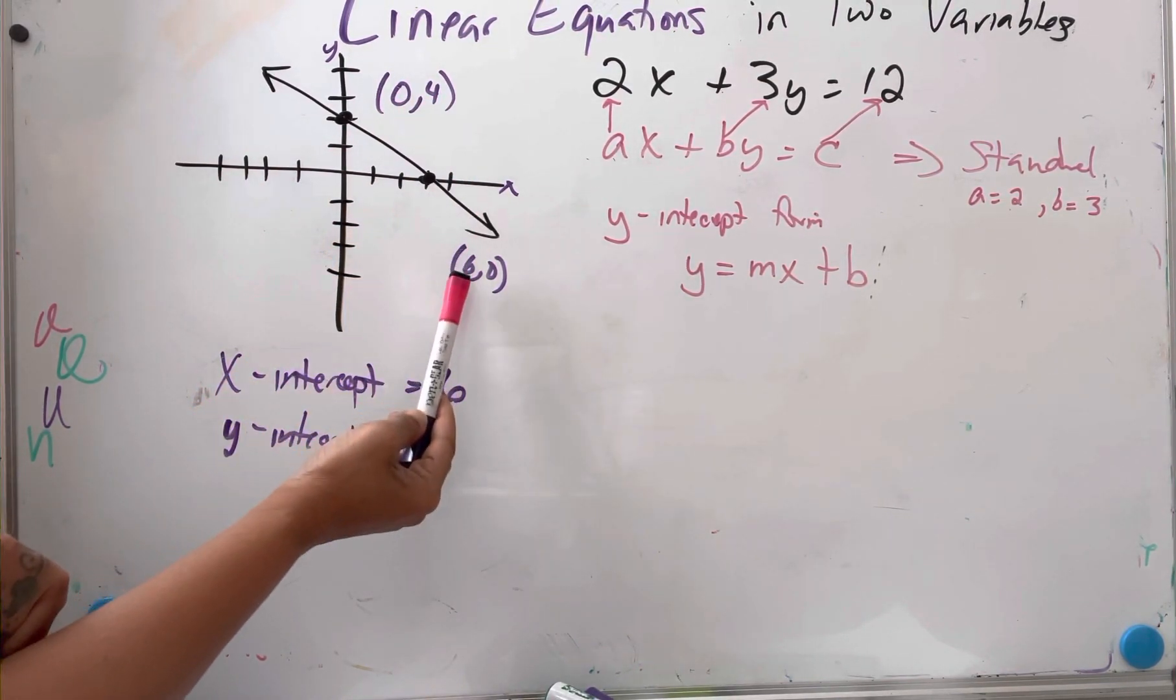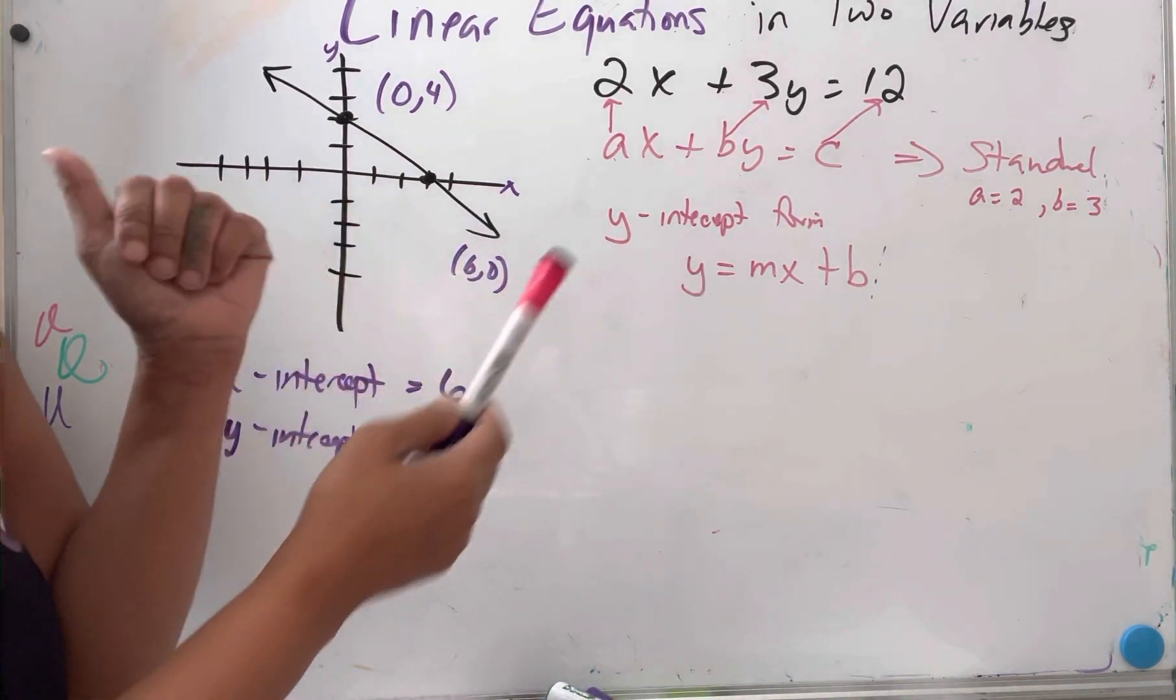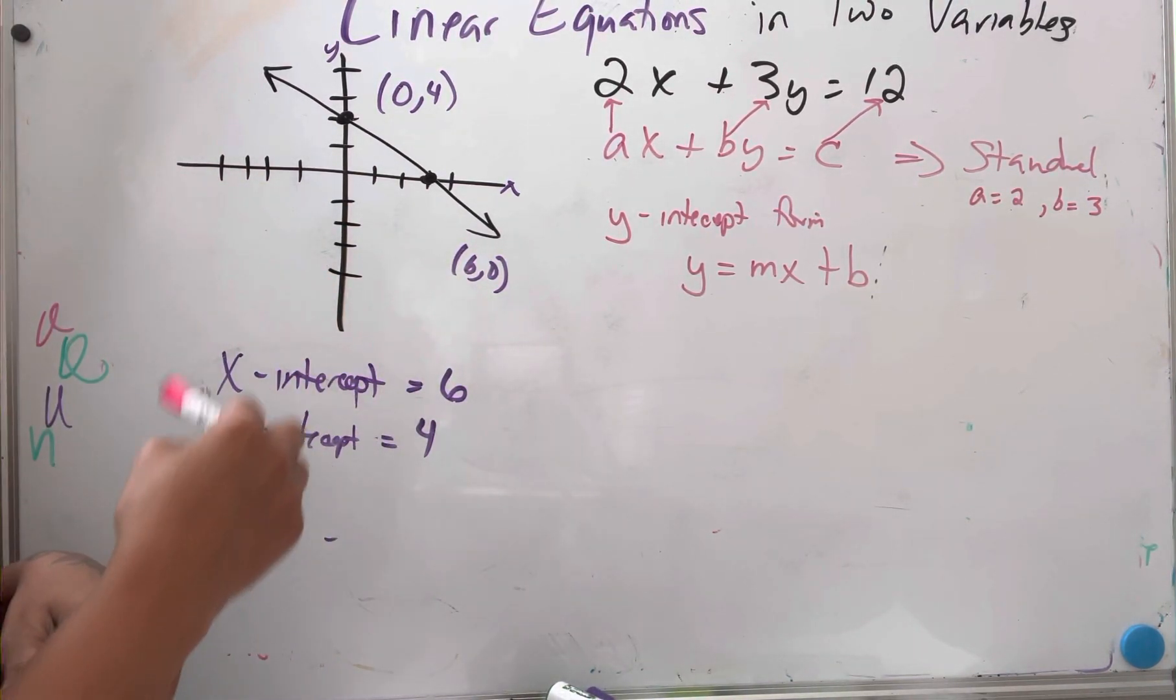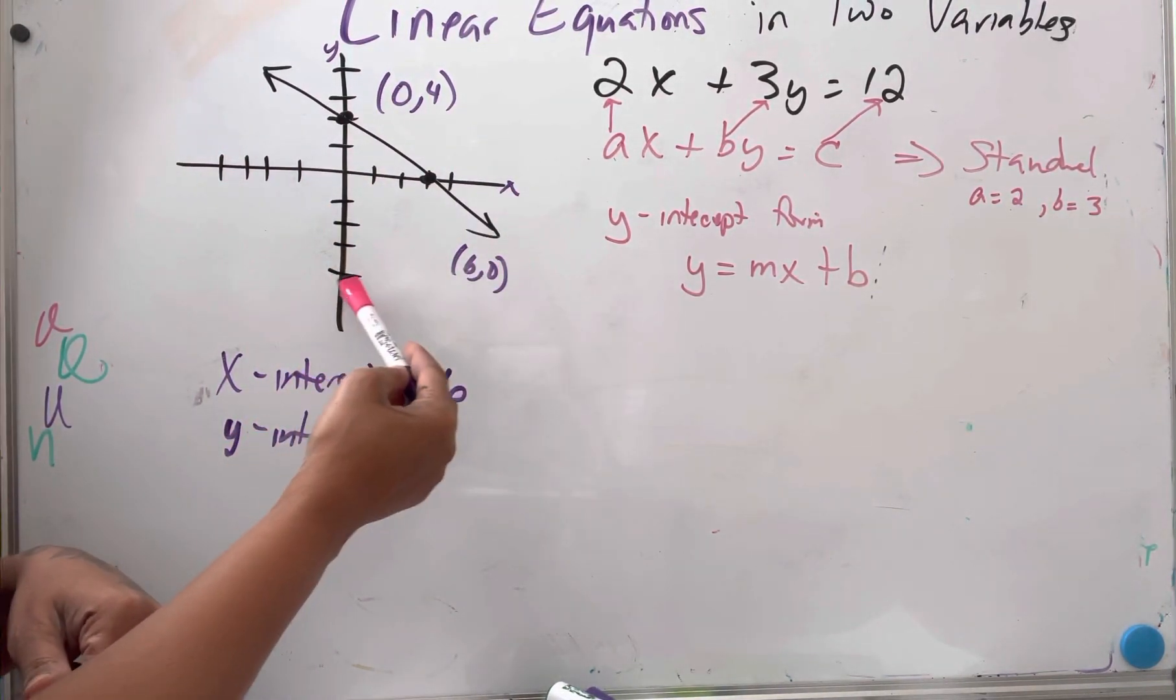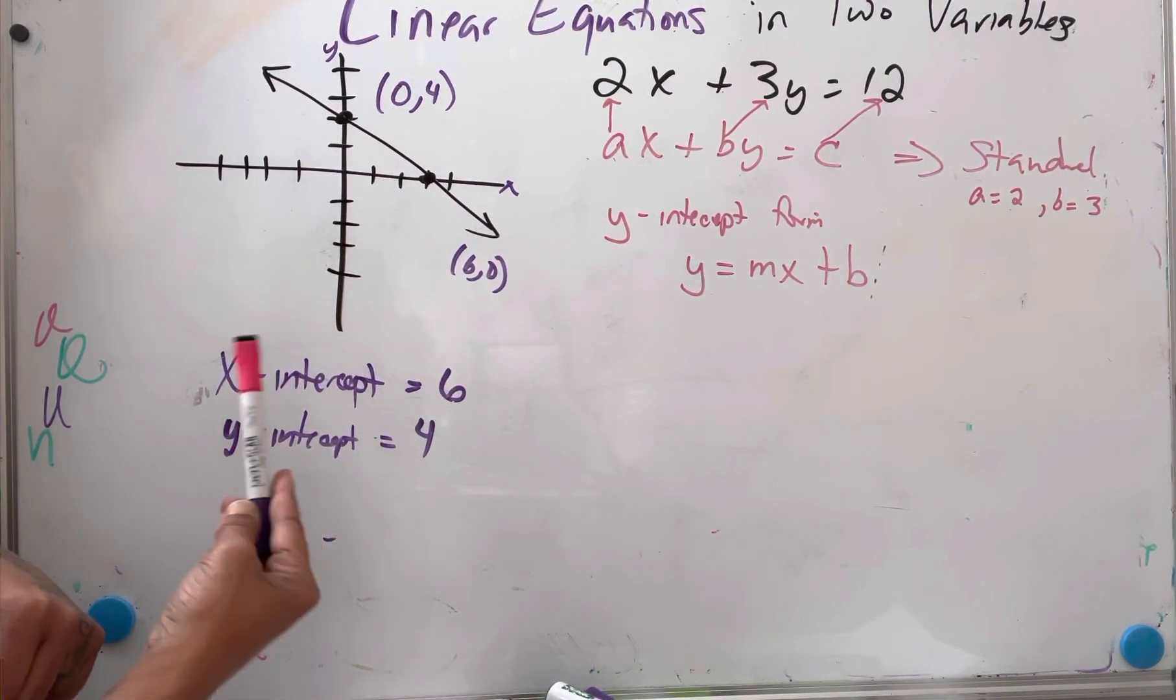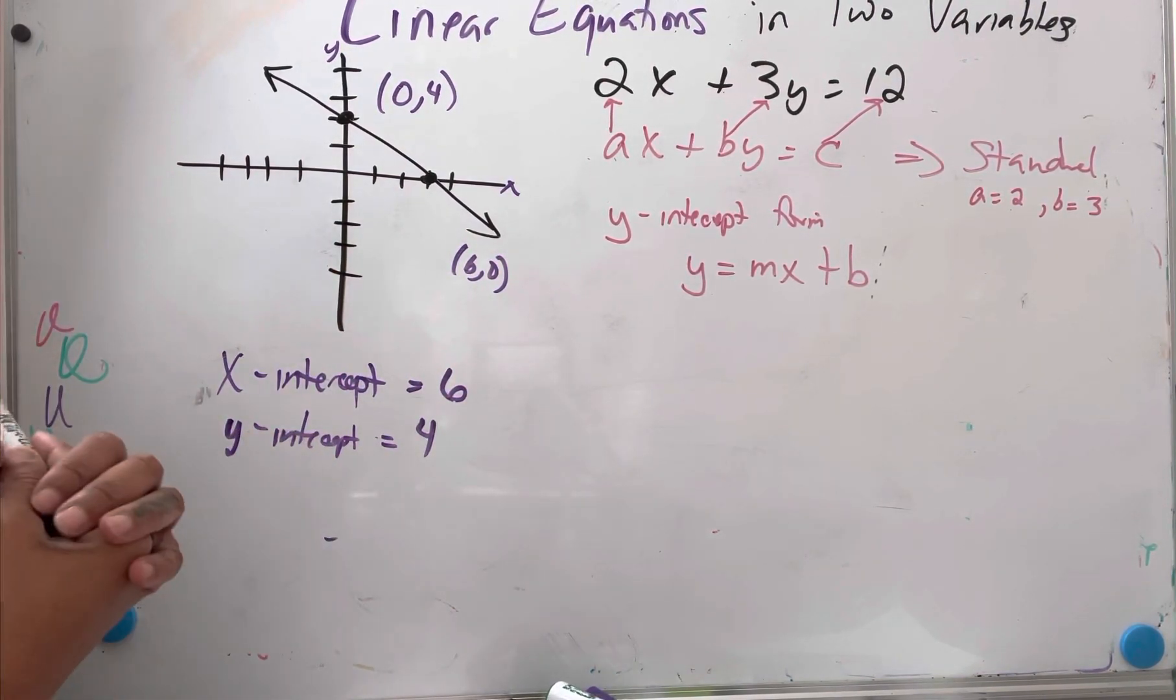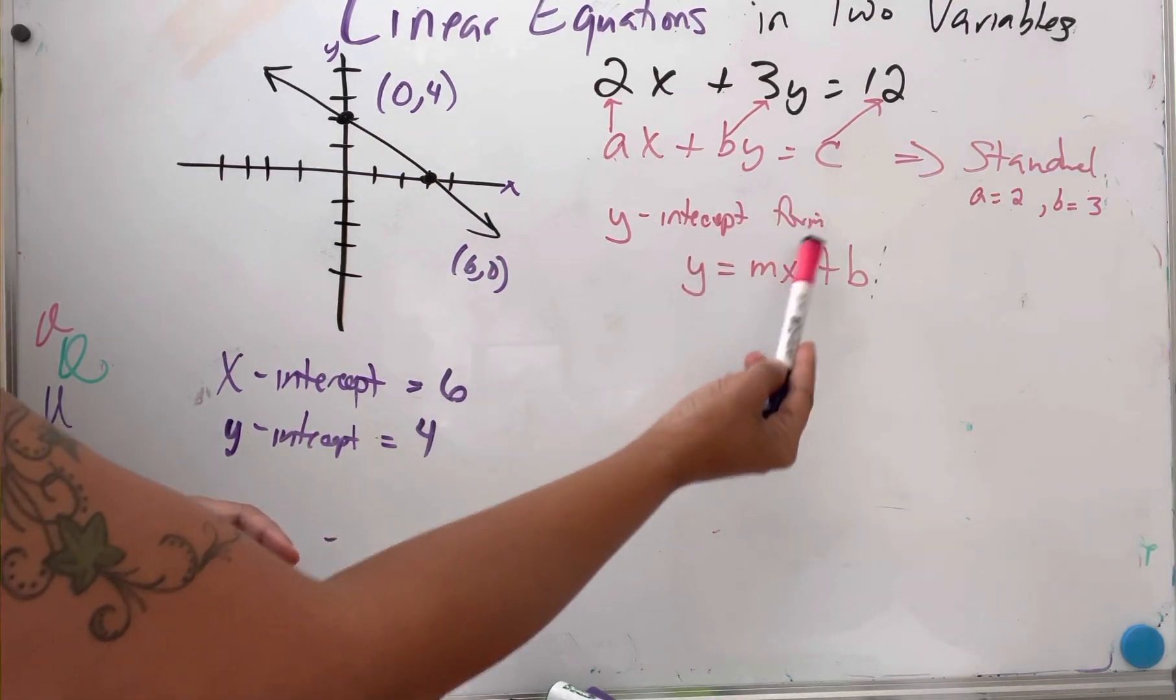Zero four and six zero. Take a look at the previous video if you don't recall about those ordered pairs and how we got this graph here.